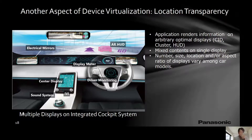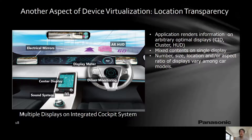Another aspect of device virtualization is location transparency. By this technology: first, an application can render information on arbitrary optimal device displays; second, mixed contents can be rendered to a single display from applications running on different ECUs; third, applications are independent from the number, size, location, and aspect ratio of displays.